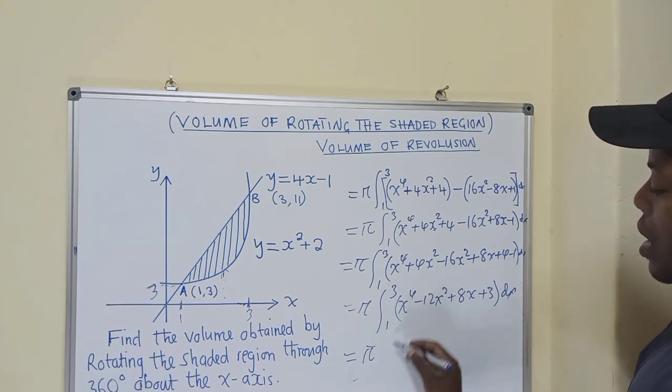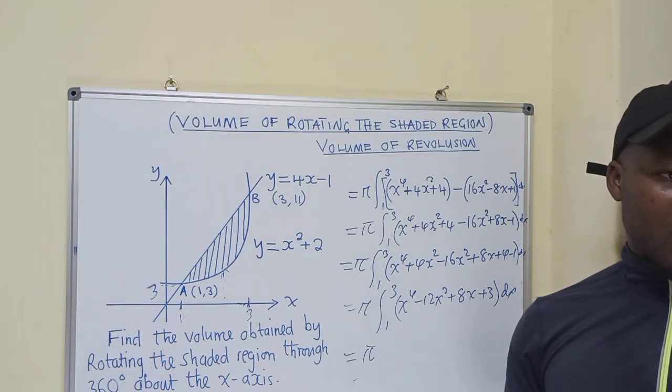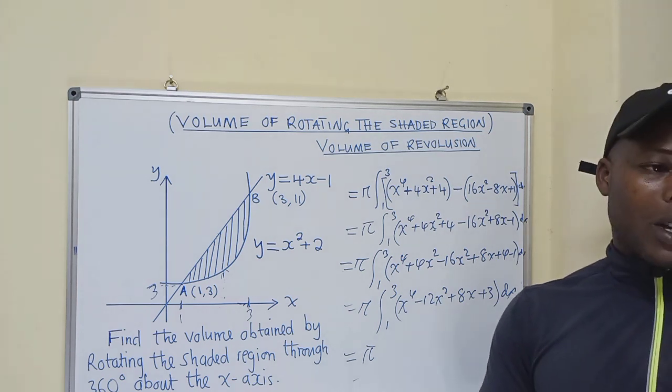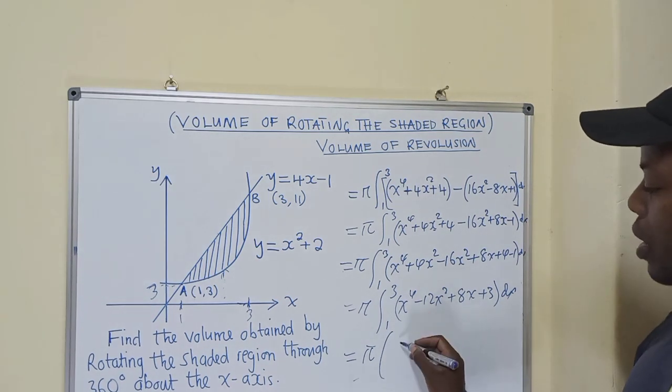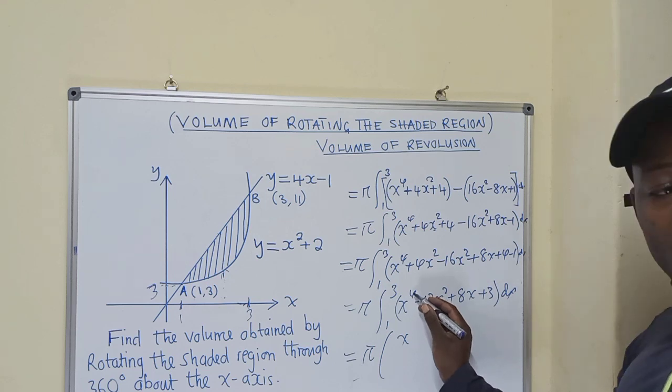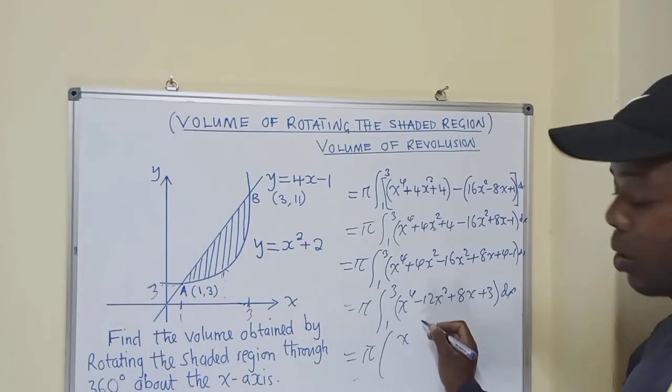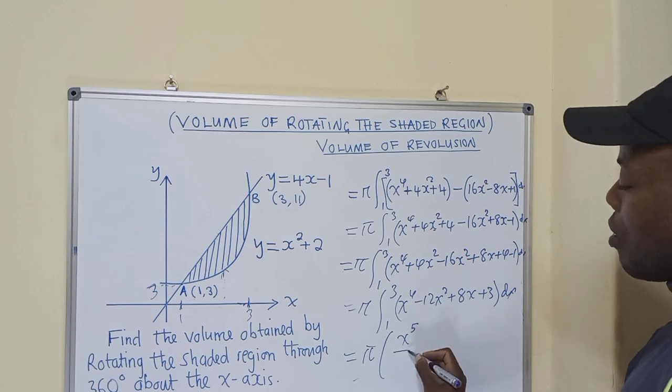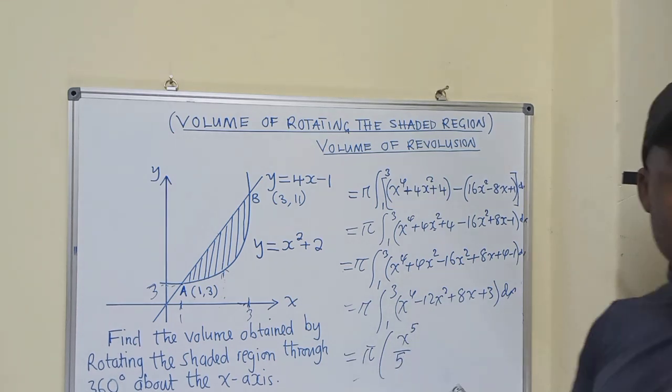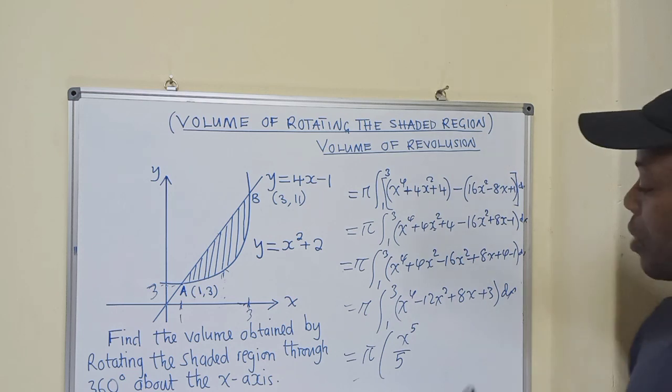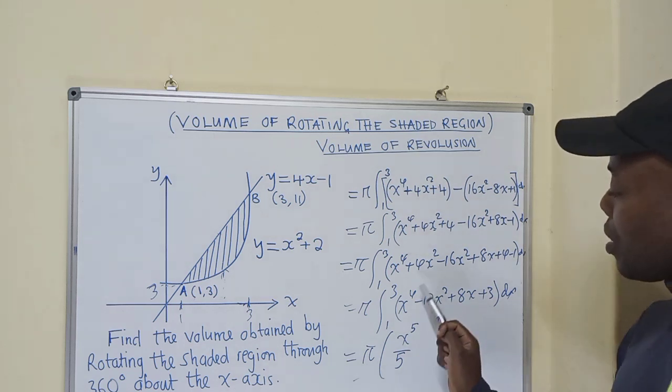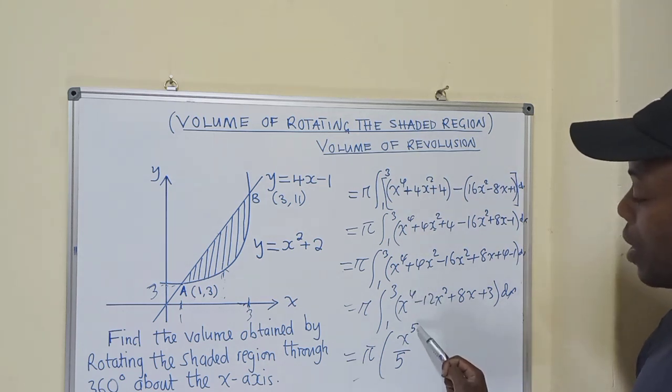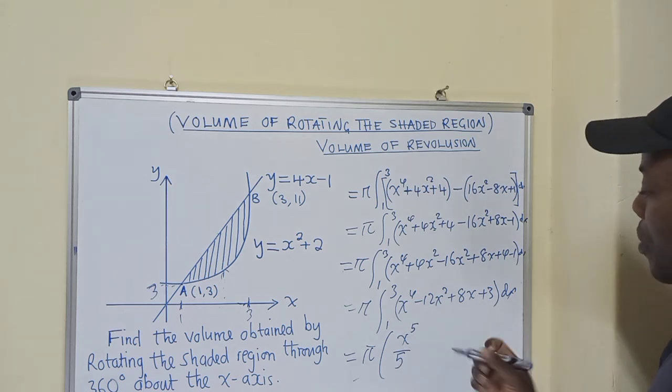So, pi. I think you have an idea on how to integrate, isn't it? Do you have an idea? This is where you need to add a 1 to each power. So pi would be outside. So here, this power 4 will add a 1, so it would be 4 plus 1, so we have a 5 over 5. This is the rule of integration. Whenever you are integrating, you must be adding a 1 to each power.